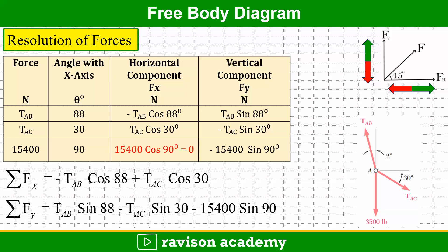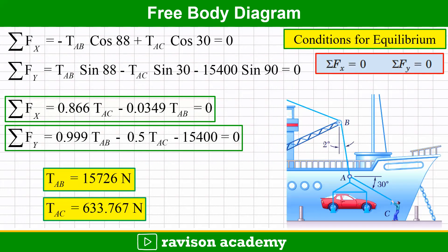Summing all horizontal components: ΣFx = −T_AB·cos 88° + T_AC·cos 30° = 0. Summing all vertical components: ΣFy = T_AB·sin 88° − T_AC·sin 30° − 15400·sin 90° = 0. Since the system is in equilibrium, both summations are set equal to zero, yielding two equations in two unknowns.